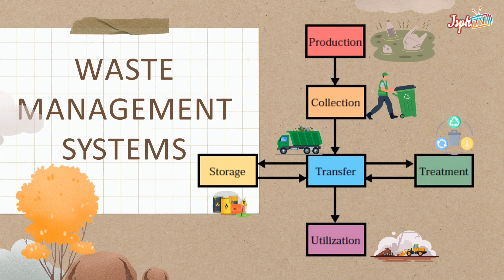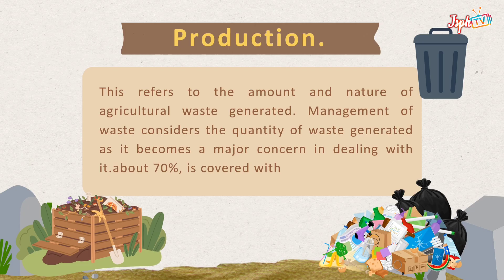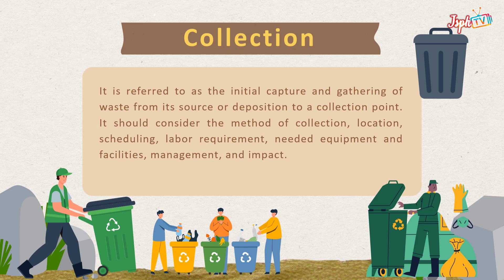For the waste management system, we have: production, collection, transfer to storage, treatment, and utilization. Production refers to the amount and nature of agricultural waste generated. Management of waste considers the quantity of waste generated, as it becomes a major concern in dealing with it.